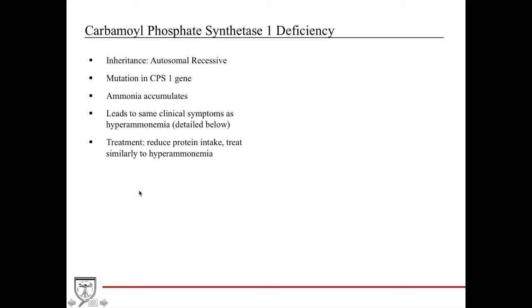The next one we're going to talk about is carbamoyl phosphate synthetase 1 deficiency, CPS1. This also is AR. This is where ammonia will accumulate in the blood, and again, leads to the exact same obtunded kind of picture. This is also treated by reducing the amount of protein intake, and you treat it similar to hyperammonemia.